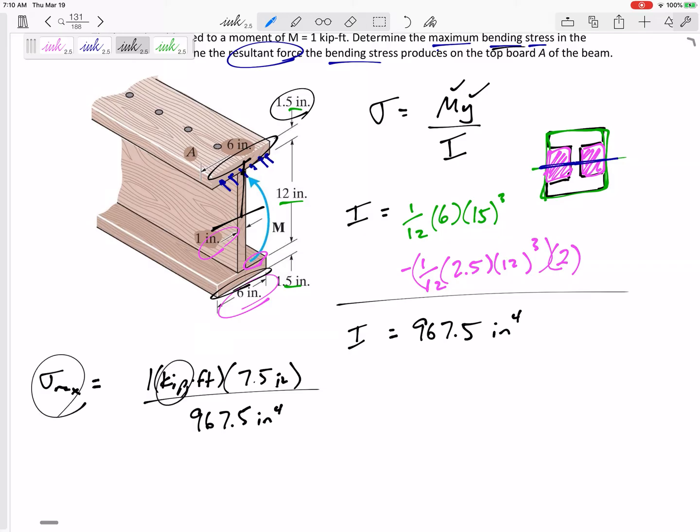Over 967.5 inches to the fourth. I'm looking for a stress. So I'm probably going to look for KSI or PSI. And so this, yeah, right here. This foot, I need to change to inches. So multiply times 12. Then I've got KSI. But it's actually a very small 0.0930 KSI or 93.0 PSI.